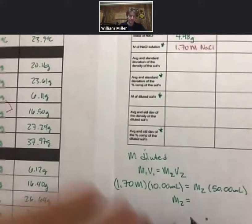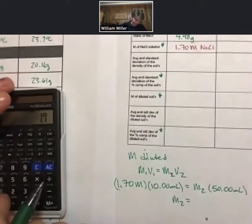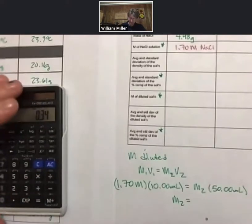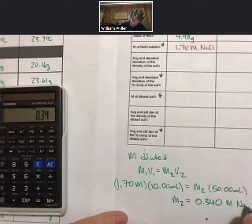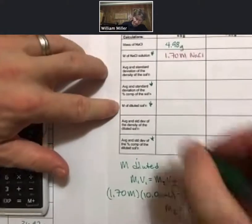And by dividing, we can go ahead and do 1.7 times 10 divided by 50. I get 0.34. And to a third sig fig, 0.340 molar sodium chloride. And that's going to be the molarity of my diluted solution.